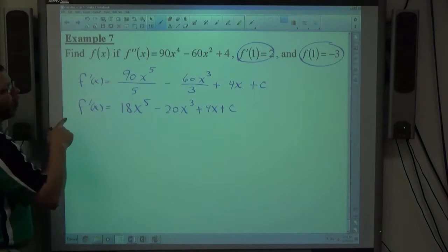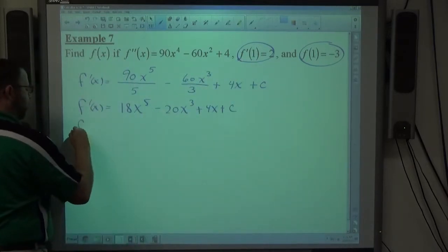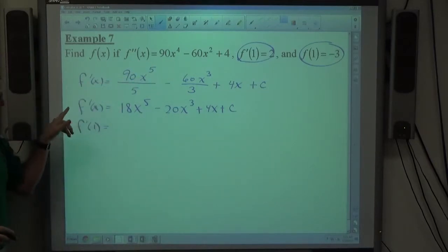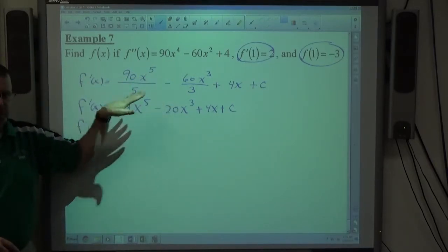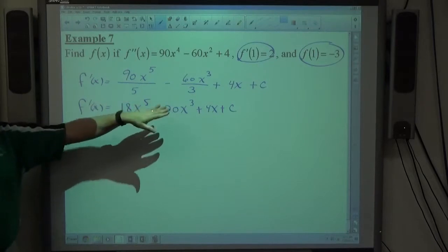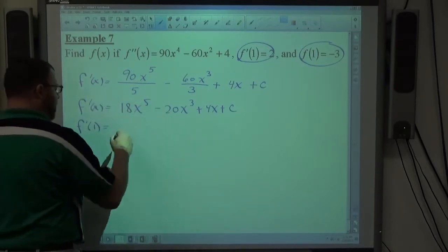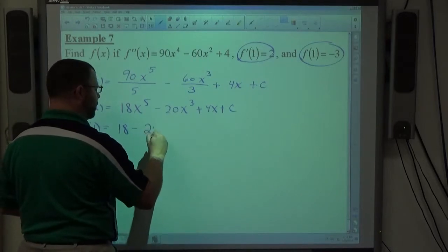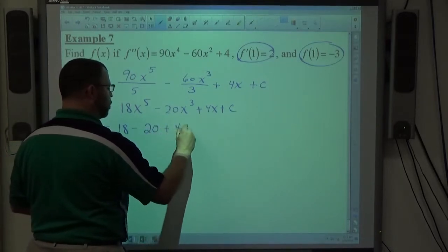Now, what I know about is what f prime of 1 is, so I want to do f prime of 1. We already know it equals 2, but f prime is equal to this function with the plus c on it, so I want to figure out what f prime looks like here. So 18 times 1 to the 5th is 18, minus 20 times 1 cubed is 20, plus 4 times 1 is 4, plus c.